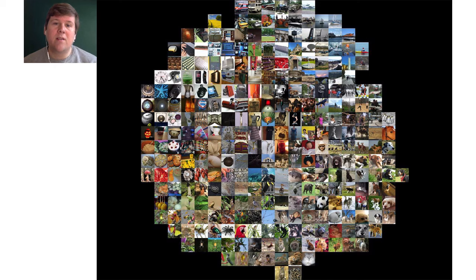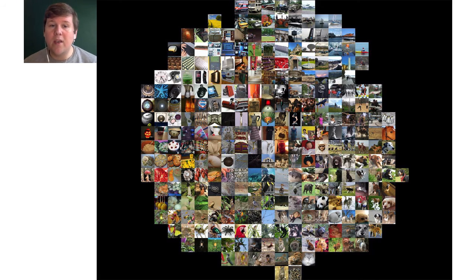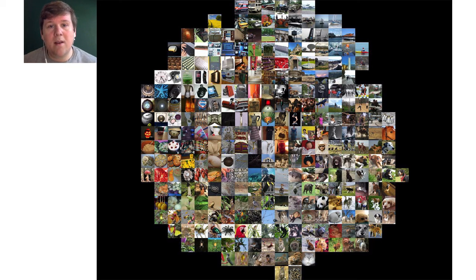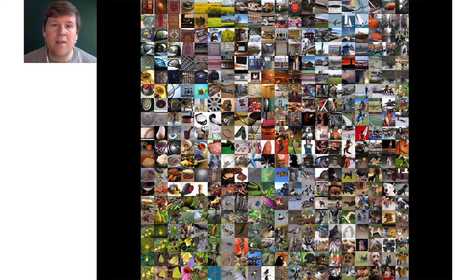Here we see images from a dataset called ImageNet, clustered based on the activations of a neural network. We have a convolutional neural network with a layer FC7 with 4096 dimensions, and we take the activations for each image from the network and project them down with t-SNE so that similar images are close to each other. This can be done for all 50,000 images in the validation data, allowing you to compare what is considered similar by the network and what is considered dissimilar — a powerful tool for understanding how well a model captures the data.